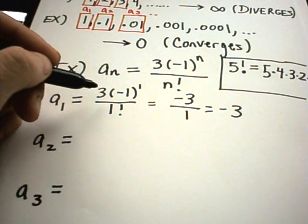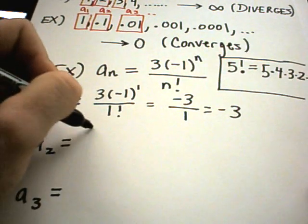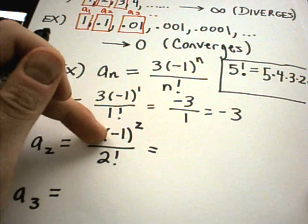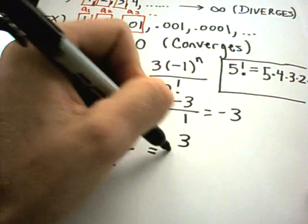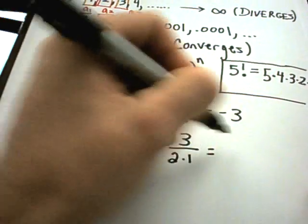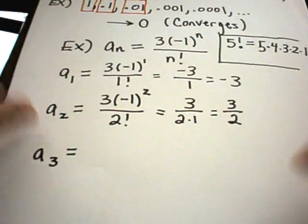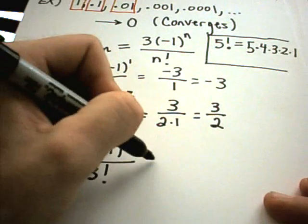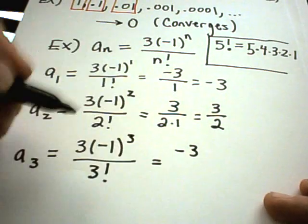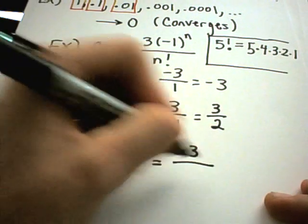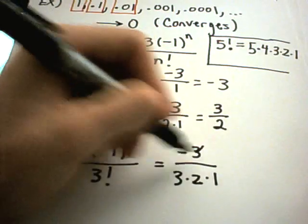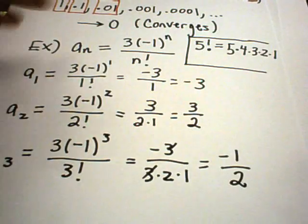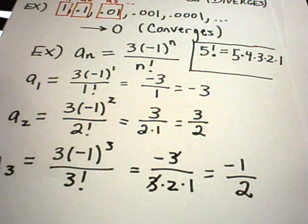For a_sub_2, we get 3 times negative 1 squared over 2 factorial. Negative 1 squared is positive 1, times 3 is 3, and 2 factorial is 2 × 1 = 2, leaving us with 3/2. For a_sub_3, we get 3 times negative 1 cubed over 3 factorial. That's negative 3 over 6, and the threes cancel, giving us negative 1/2. So the first three terms are negative 3, 3/2, and negative 1/2.